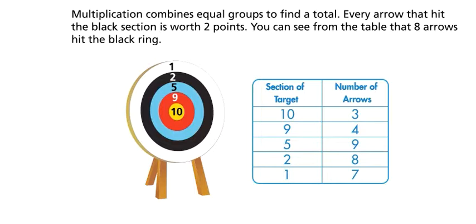Multiplication combines equal groups to find a total. Every arrow that hit the black section is worth two points. You can see from the table that eight arrows hit the black ring.